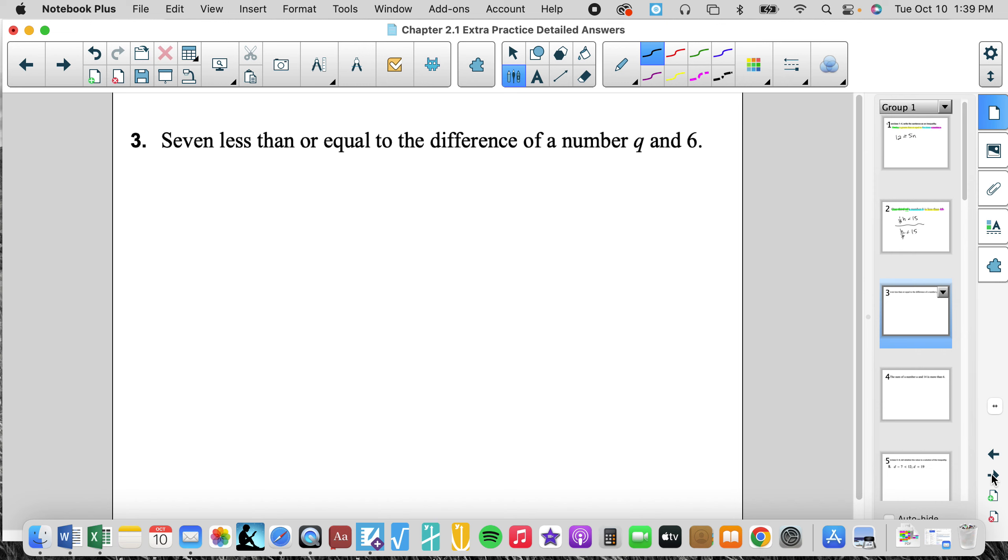Number three. Seven less than or equal to the difference of a number q and six. So less than or equal to. And then seven less than or equal to the difference, that's subtraction, of a number q and six. So that difference is talking about those two things. So we have seven less than or equal to the difference of a number q and six. We would end up with that inequality, 7 ≤ q - 6.